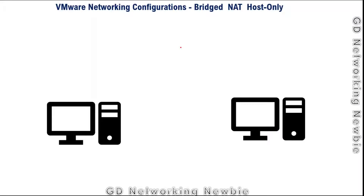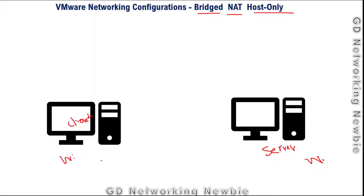In this video we are going to discuss virtualization, specifically VMware networking configurations — how we connect different virtual machines together. We will be discussing three options available in VMware: bridged, NAT, and host-only. In the old days, if you wanted a client-server architecture for learning purposes, you needed two physical machines — one acting as a client and one as a server.